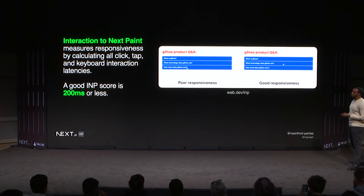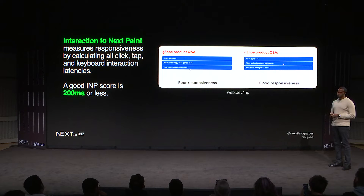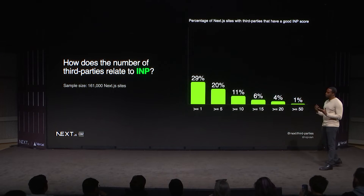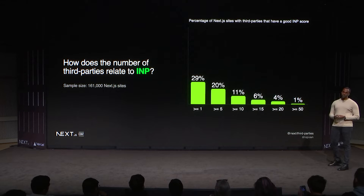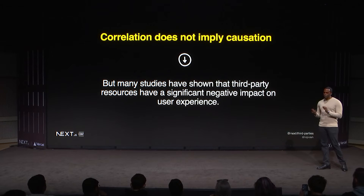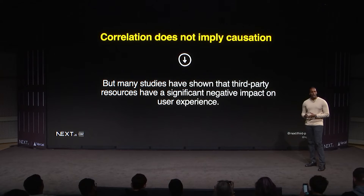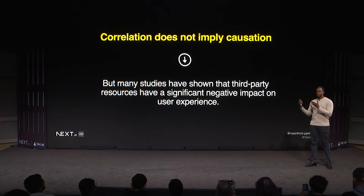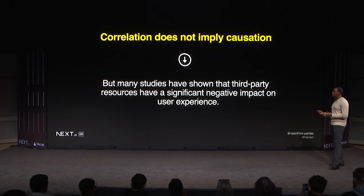Looking at another performance metric — Interaction to Next Paint (INP), which measures responsiveness by calculating all click, tap, and keyboard interaction latencies — a good INP score is 200 milliseconds or less. We see a very similar chart: Next.js sites that load more third parties have poorer performance when it comes to responsiveness. It's important to note that correlation does not necessarily mean causation, but when we couple that data with many studies we've done, it becomes clear that third party resources have a significant negative impact on user experience.